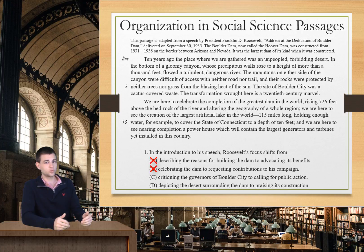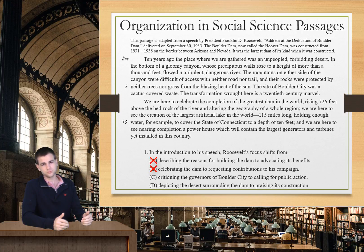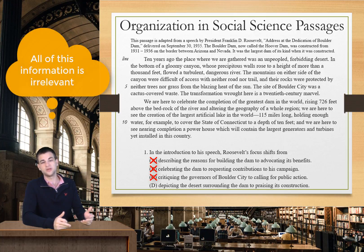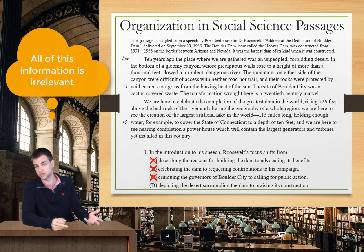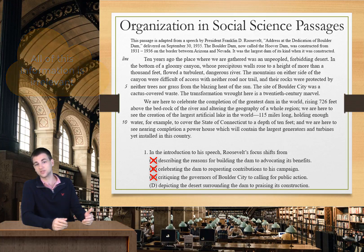C says Roosevelt's focus is shifting from critiquing the governors of Boulder City to calling for public action. This is another really bad answer choice. Roosevelt never mentions the governors of Boulder City, he doesn't really criticize anyone anywhere in the speech, and he never calls for public action. So every element of C is entirely irrelevant as far as the passage is concerned. So we will eliminate that as well.